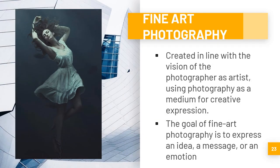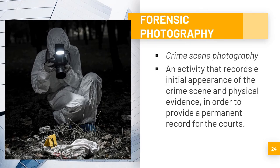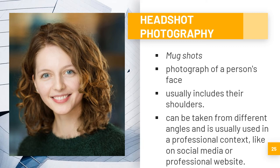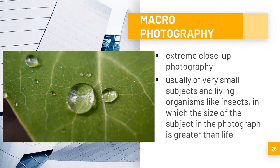Next is fine art photography, which refers to highly creative images that have abstract influence — these photographs can be equal to an artist's expression on painting. Next is forensic photography, also known as crime scene photography, where the photographer captures images for an accurate representation of the scene of the crime and photographs physical evidence to provide a permanent record for the courts. Then headshot photography, which focuses mainly on the person's face — also known as mugshots. And macro photography, which is about close-up images of a specific topic, commonly applied to capture details of organisms or nature not visible to the naked eye.